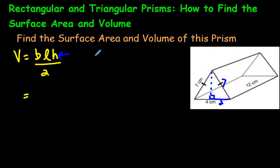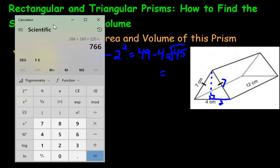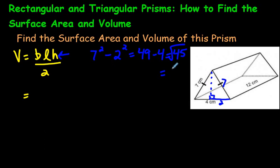Please watch the video on the Pythagorean theorem if you need a refresher. All you do is go 7 squared minus 2 squared — that's 49 minus 4 — which equals 45. Then take the square root of 45 to find the height. The square root of 45 is approximately 6.7, so the height is 6.7 centimeters.